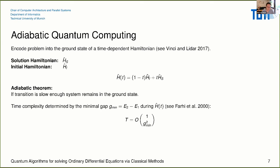Another framework is adiabatic quantum computing. You put your solution into the ground state of a Hamiltonian H_S, initialize your system to an initial Hamiltonian whose ground state you already know, and then slowly transition from the initial Hamiltonian to the solution Hamiltonian. If you do this slowly enough, the system always remains at the lowest energy level, and at the end you can read out the solution. The time complexity is determined by one divided by the gap squared, where the gap is between the two lowest energy levels along the full transition path.